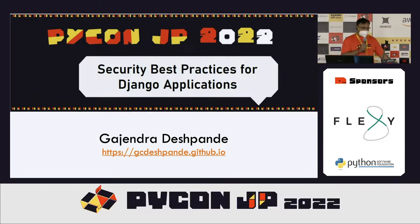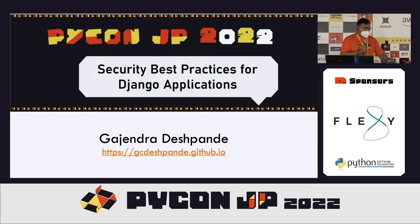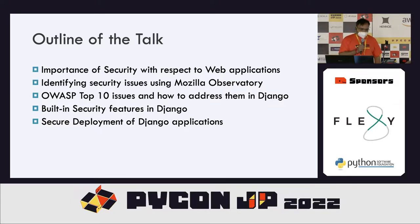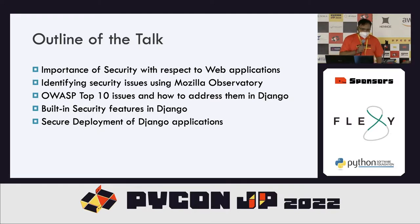Yesterday my friend Tushar spoke about some aspects of security, but we are following a different approach. In today's talk I'll cover the importance of security with respect to web applications, then identifying security issues using Mozilla Observatory, then OWASP top 10 issues and how to address them in Django, then built-in security features and security deployment of Django applications.